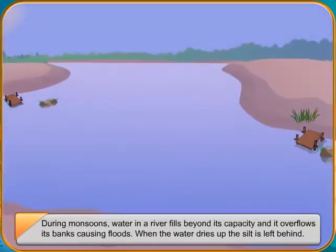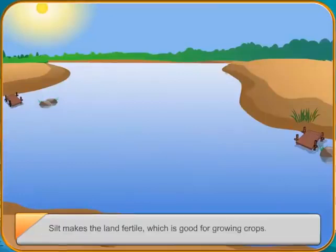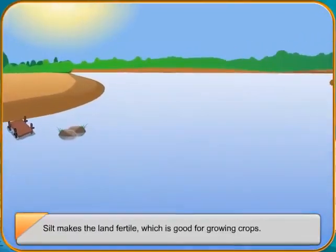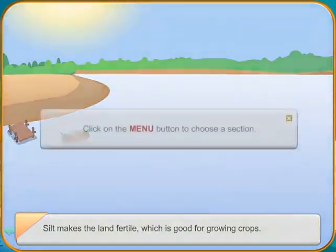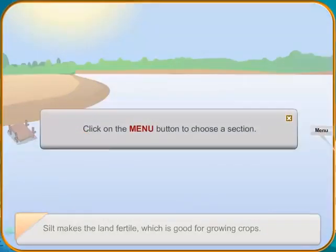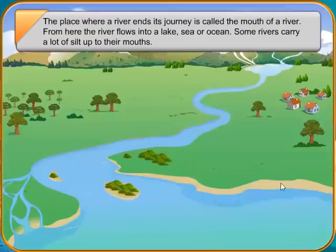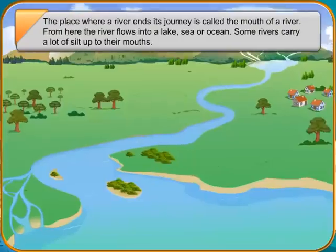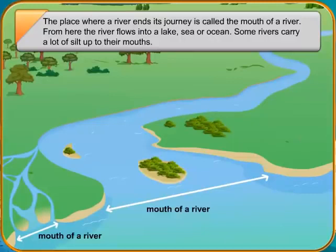Some rivers carry a lot of silt up to their mouths. The mud makes it hard for the river to flow in one stream so it breaks into many small rivers to reach the sea or ocean. Over the years, silt gets deposited between the smaller rivers in the mouth of a river, forming a triangular shape known as a delta. Some rivers do not form a delta and flow into the sea in a continuous stream. The mouth of such a river is called an estuary.